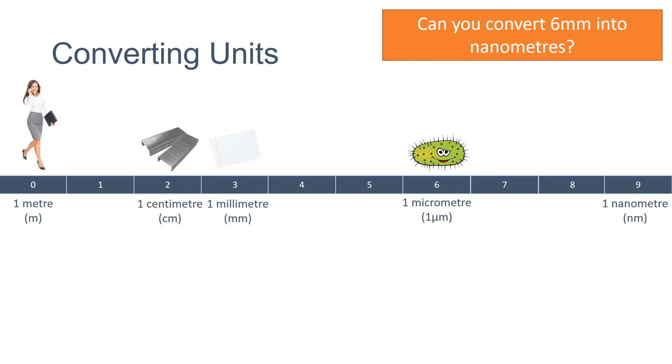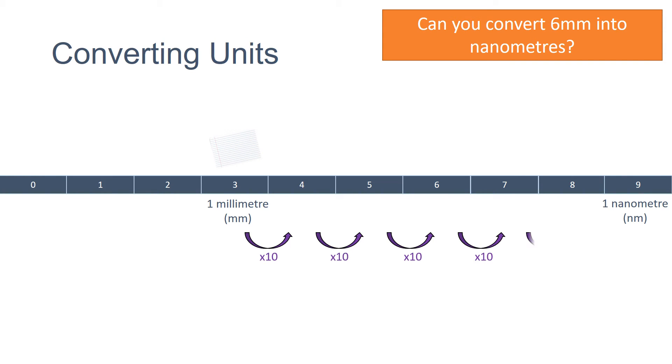Let's try another example. So between millimetres and nanometres there are six orders of magnitude. Therefore, we need to multiply the millimetres by one million, meaning that six millimetres is equivalent to six million nanometres.